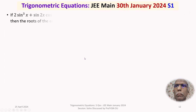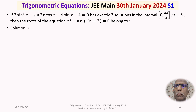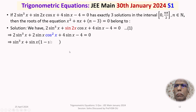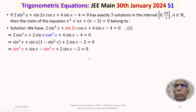The given trigonometric equation is cubic in sinx. Writing sin2x = 2sinx·cosx and then cos²x = 1 - sin²x, we get 2sinx·cos²x = 2sinx(1 - sin²x) = 2sinx - 2sin³x. The sin³x terms cancel: 2sin³x - 2sin³x = 0, and combining remaining terms gives 3sinx - 2 = 0, so sinx = 2/3.